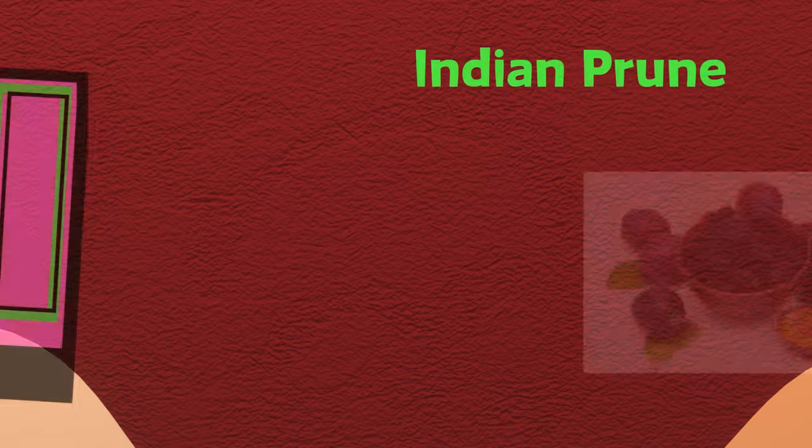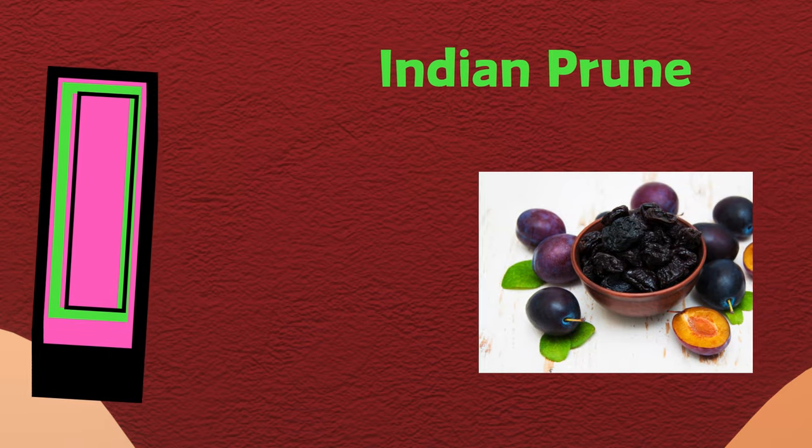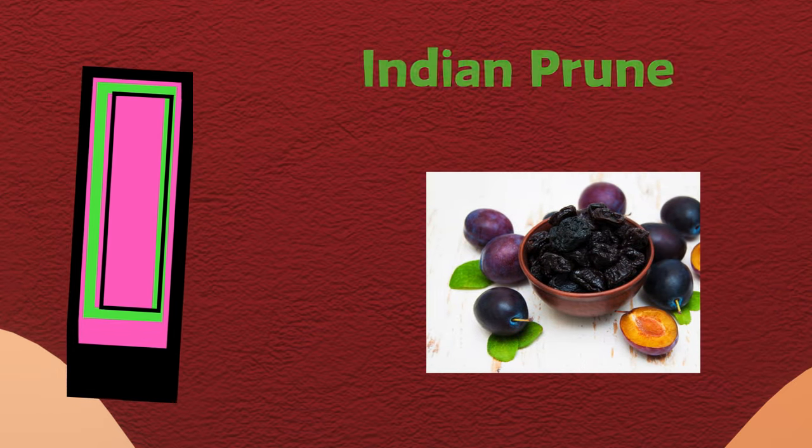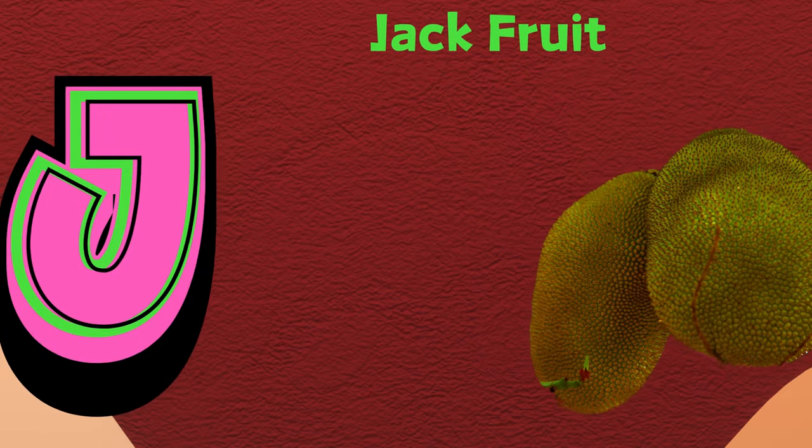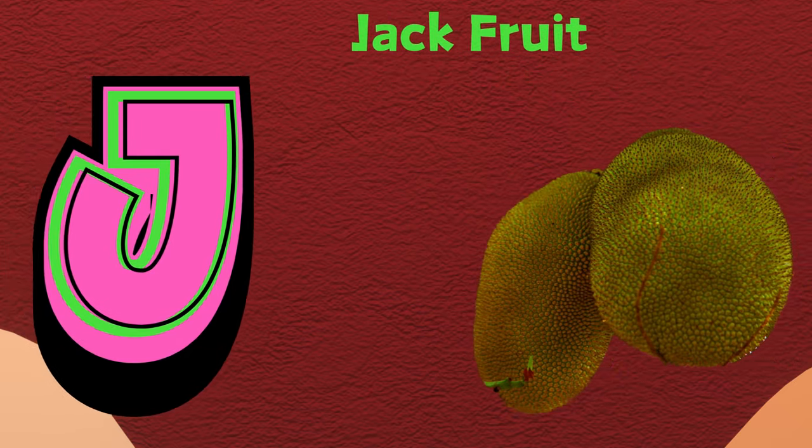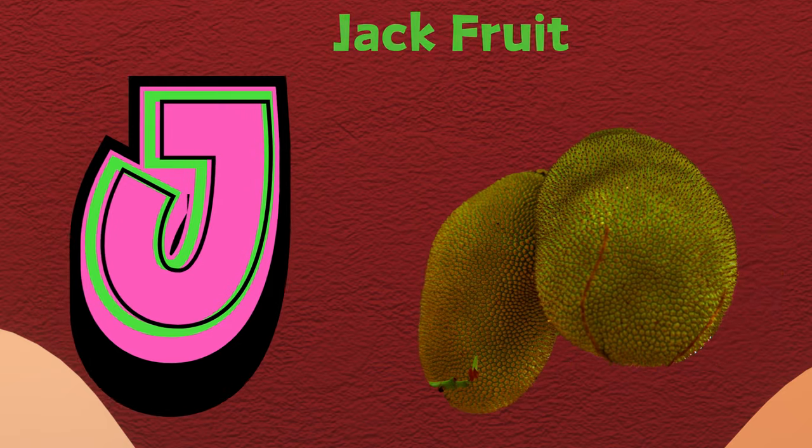I is for Indian prune. Eh, Indian prune. J is for jackfruit. J, jackfruit.